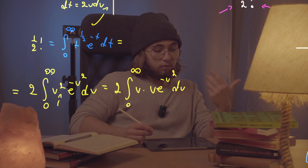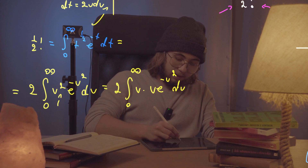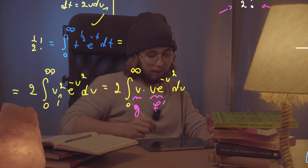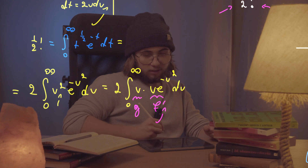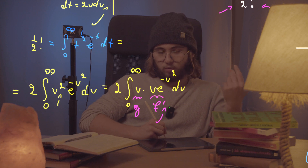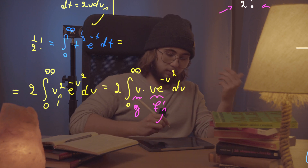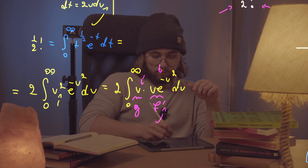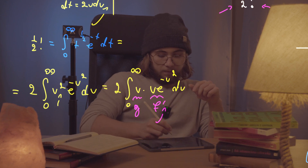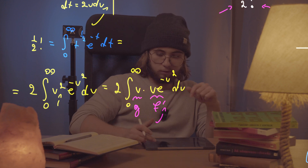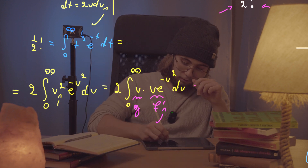I'll let u be my g function and u times e to the negative u squared be my f-prime function. I'll integrate f-prime to get the antiderivative, then subtract the integral from zero to infinity of the derivative of g times that antiderivative. The g function simplifies nicely because the derivative of u is just 1.